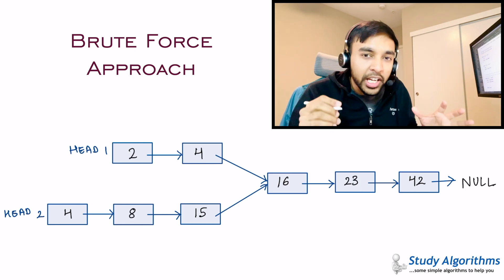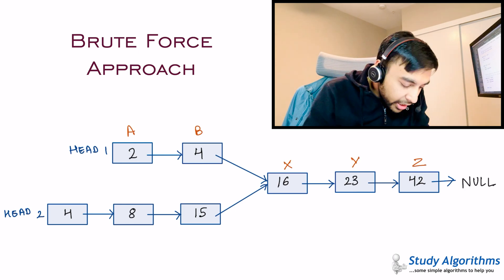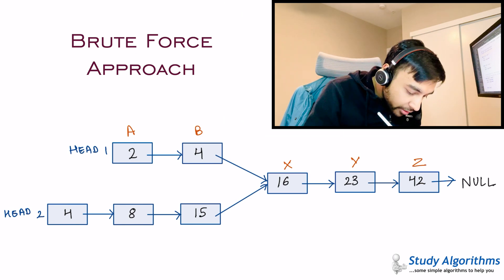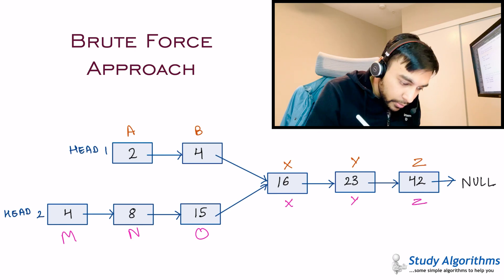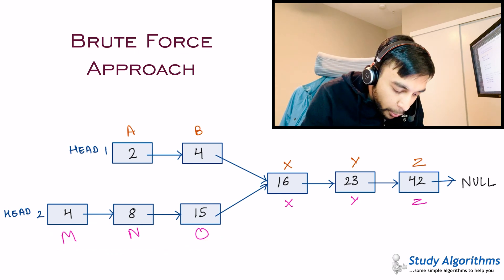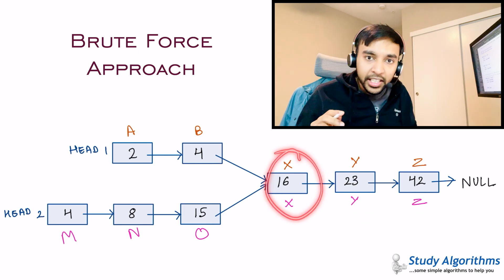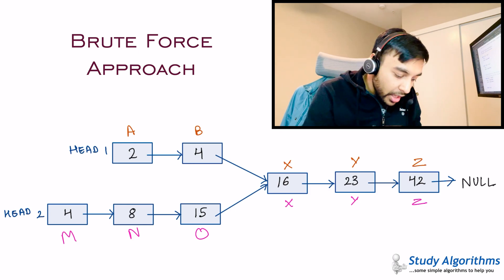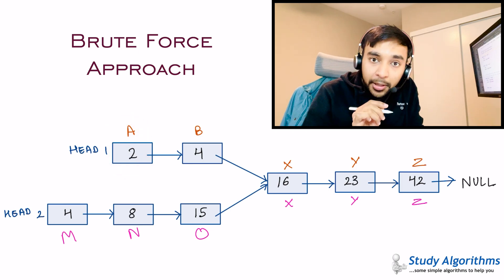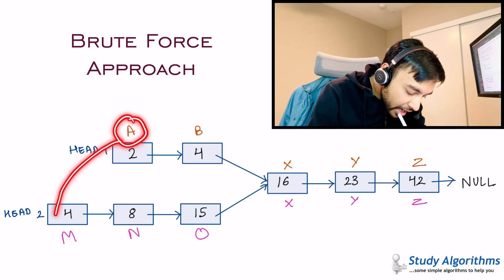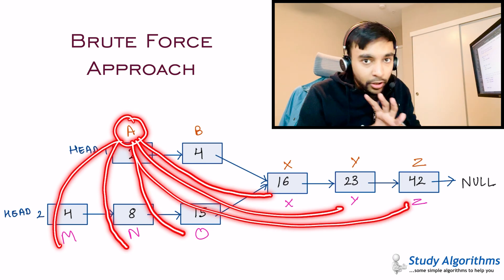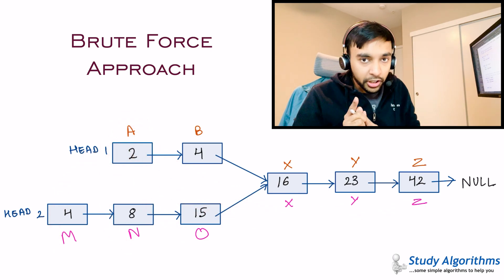Let me assign some random memory addresses. Addresses A, B, X, Y, and Z are memory addresses for your first list, and M, N, and O are unique addresses for your second list. For the intersection point, the addresses will be shared. In the brute force solution, you start with the first node — address A — and check it against all addresses M, N, O, X, Y, and Z. Since it does not match any of them, this node is not an intersection node.